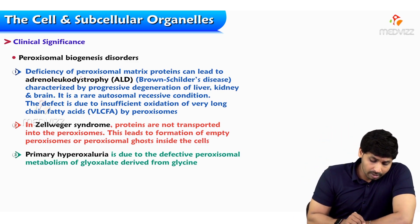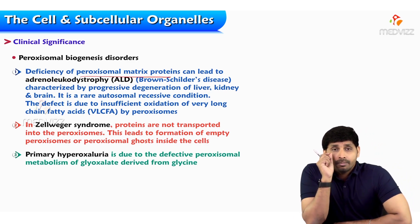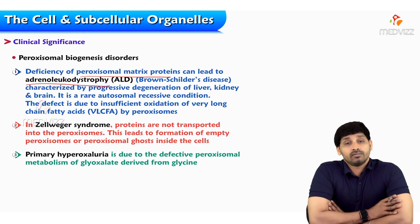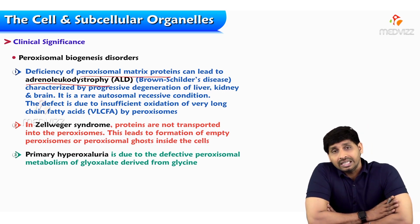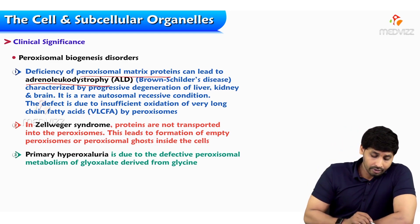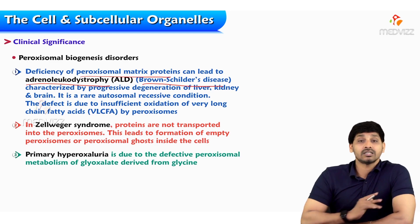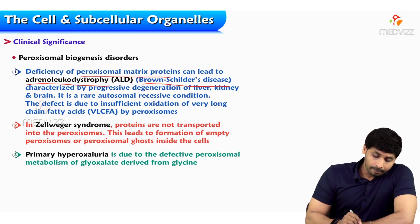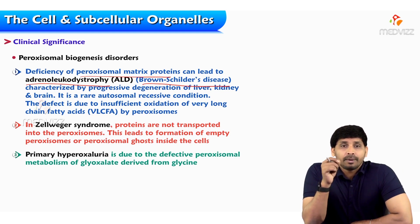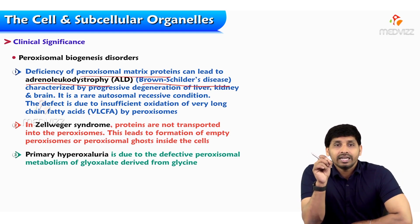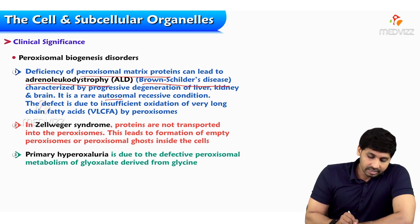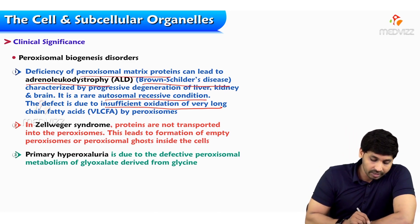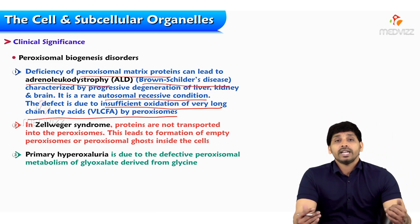Clinical significance includes peroxisomal biogenesis disorders. Deficiency of proteins in the peroxisomal matrix leads to adrenal leukodystrophy (ALD), also known as Brown-Schilder's disease. This condition is characterized by progressive degeneration of the liver, kidney, and brain. It is autosomal recessive — hereditary in nature — and the defect is due to insufficient oxidation of very long chain fatty acids by peroxisomes.